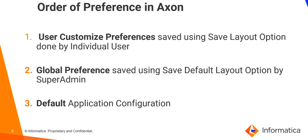Order of preference in Axon. Following is the order of preference that is implemented in Axon. First, user customized preferences, that is saved using the save layout option done by an individual Axon user. Second, the global preference that is saved using the save default layout option by the super admin. Third, default application configuration — this is applicable when no preferences, either global or user preferences, is set.